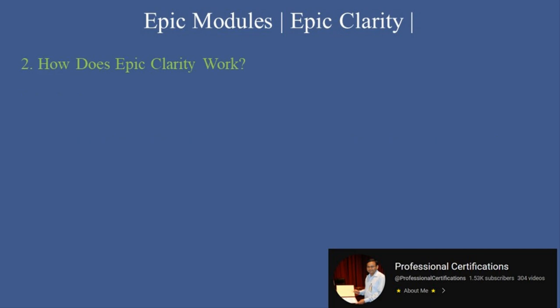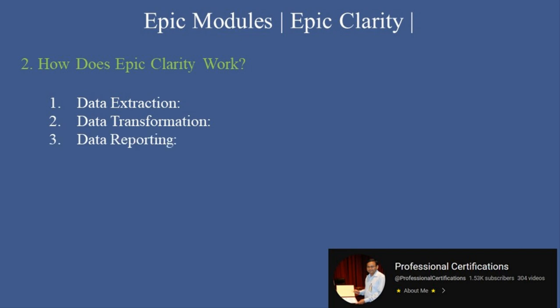How does Epic Clarity work? Here's how Epic Clarity operates. First, data extraction: data is regularly extracted from Chronicles and loaded into Clarity's relational database. Second, data transformation: the extracted data is organized into structured tables, making it easier to query and analyze. Third, data reporting: users can access Clarity data through SQL queries or visualization tools to create detailed reports. Fourth, integration with analytics tools: Clarity integrates seamlessly with business intelligence tools for advanced analytics and dashboards.